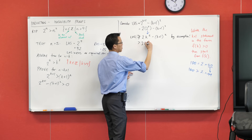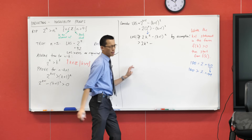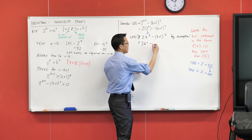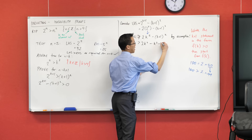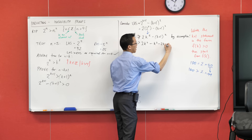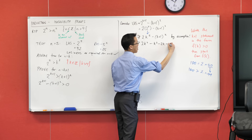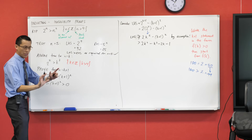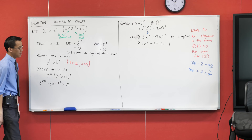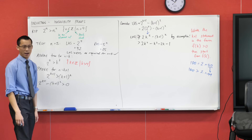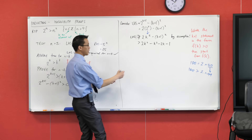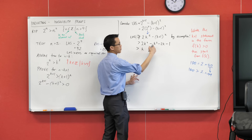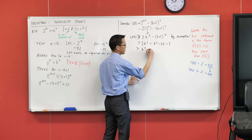I've got 2k squared — that minus affects everything that I'm about to write — so therefore I'm going to get k squared minus 2k minus 1. Now I can collect like terms; it's just the first pair of terms there: 2k squared minus k squared.